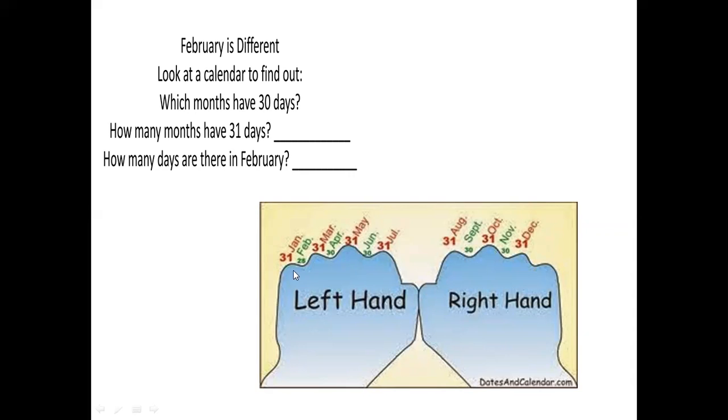Now, the upper one will be the month having 31 days. So, see January, February, March, April, May, June, July, August, September, October, November and December. Now, I told you the one which is up, like a mountain and down one like a valley. The one which is upside up, that month will have 31 days.